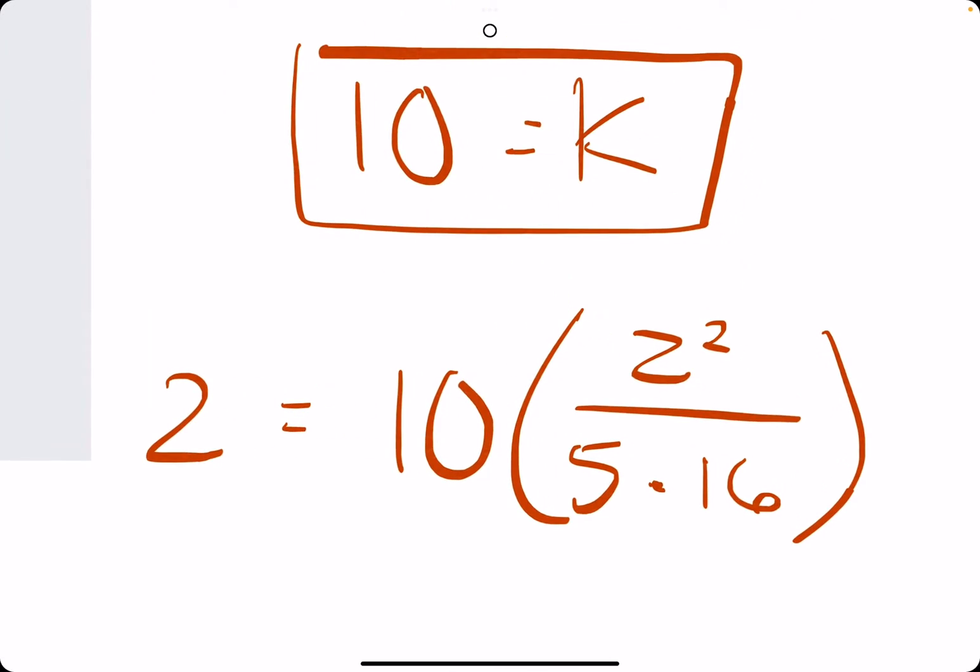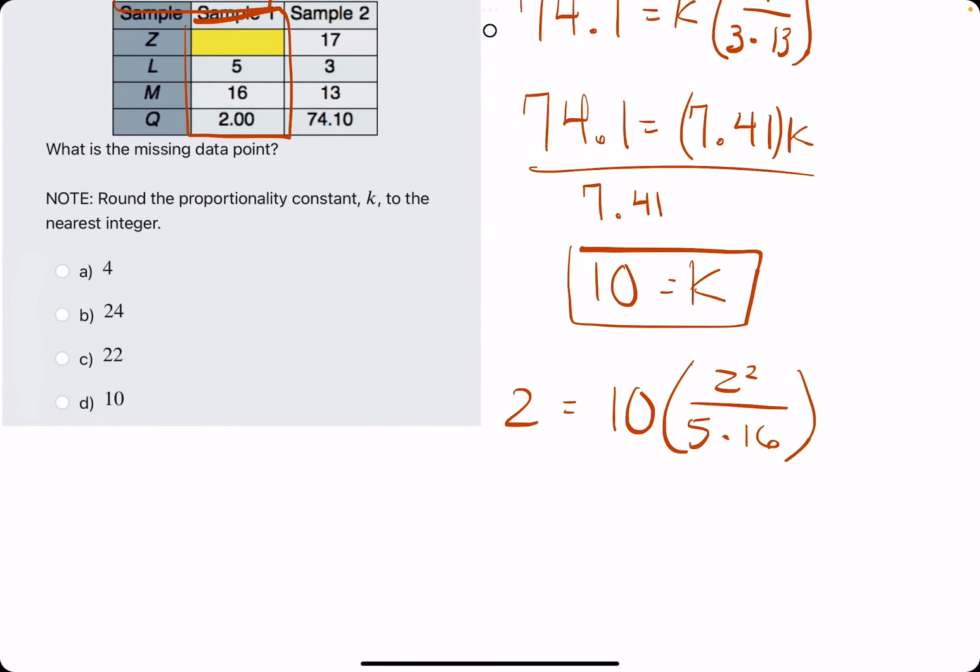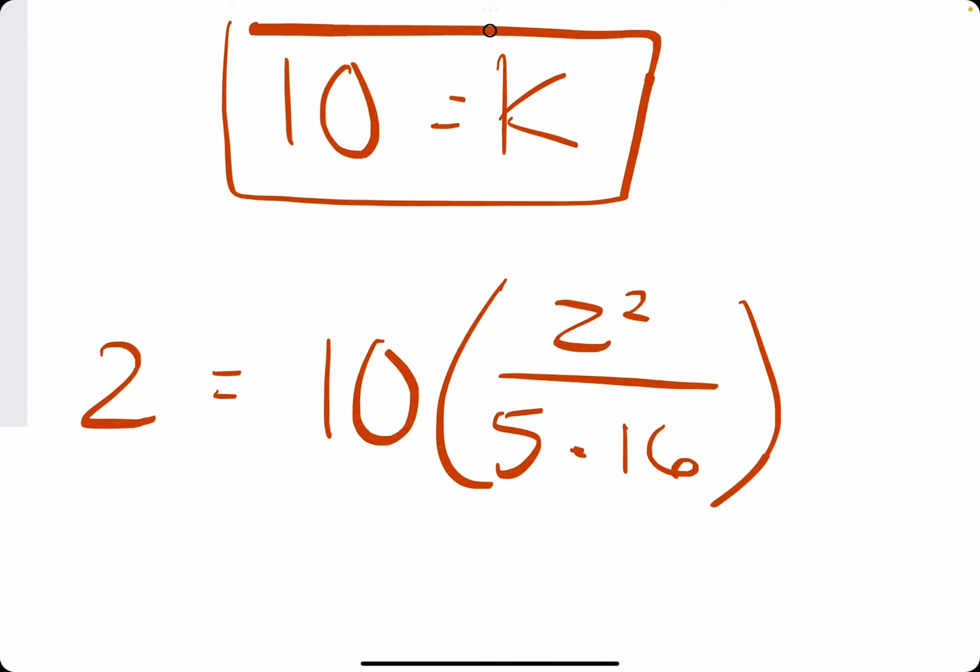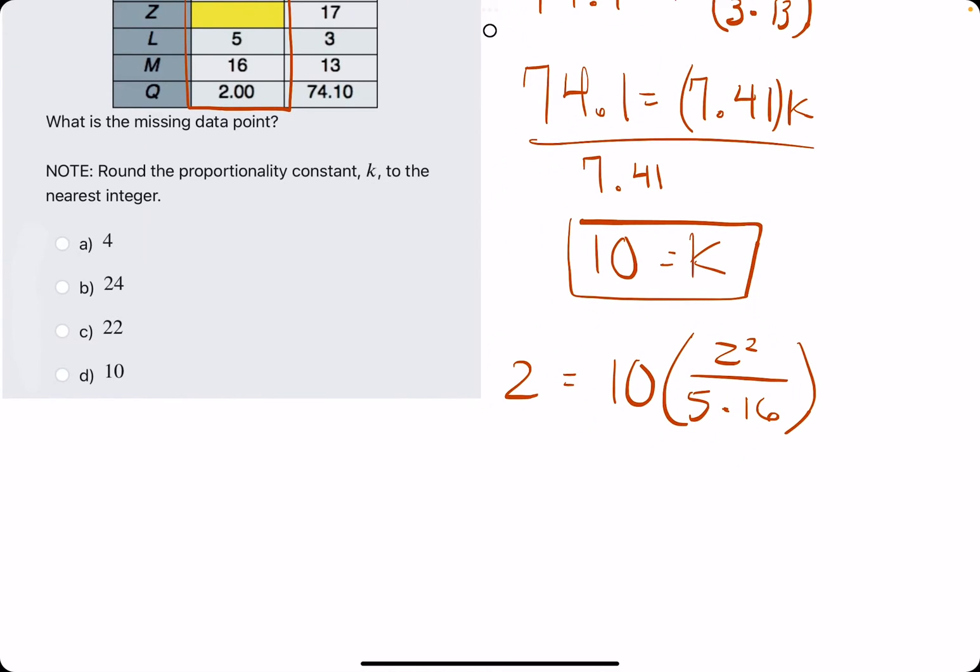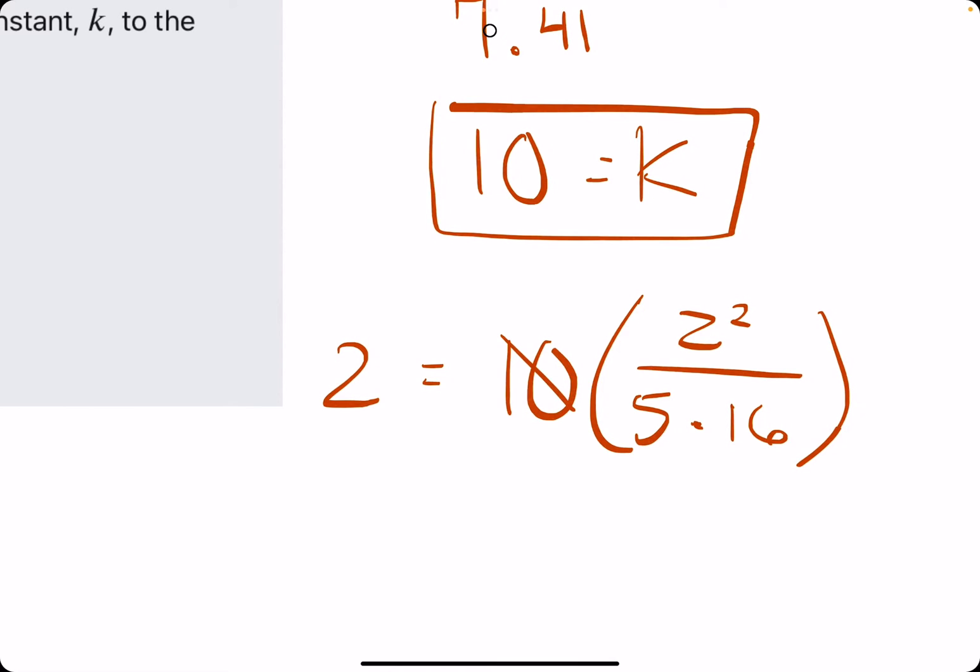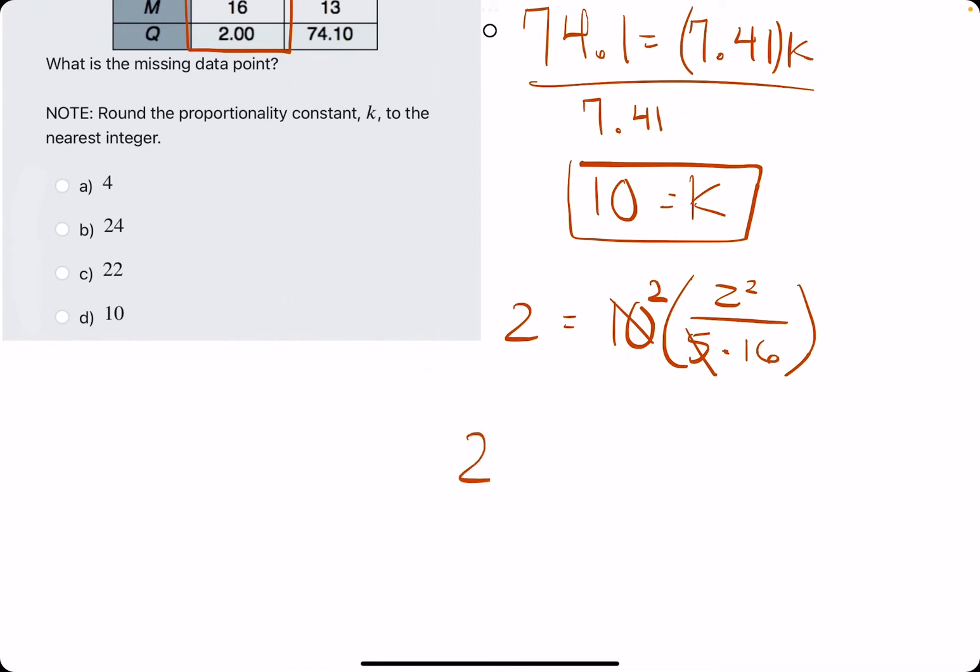And now we need to isolate Z on this right side. A trick that will help make this a little bit easier is we can eliminate 10 divided by 5 here. 10 over 5 would leave us with a nice 2. So just to simplify what we have, we have 2Z squared over 16.